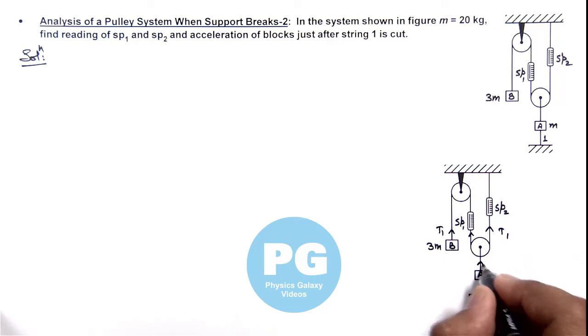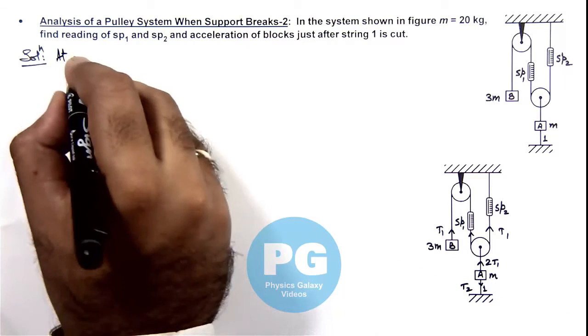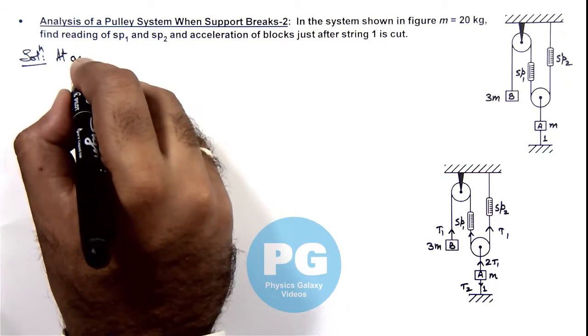And if the pulley-spring system is light, tension here will be 2T1. And tension acting in string 1 is say T2. So here if we analyze the blocks at equilibrium.